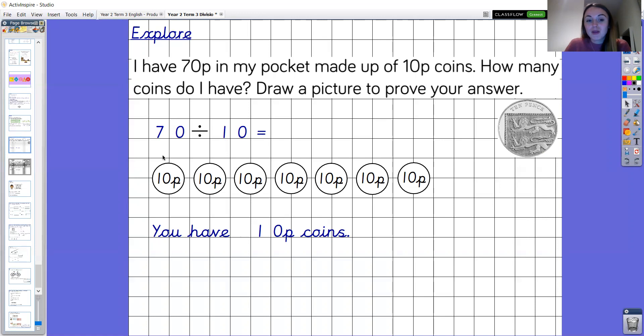Are you going to join in with me year two? One, two, three, four, five, six, seven. There are seven coins brilliant.